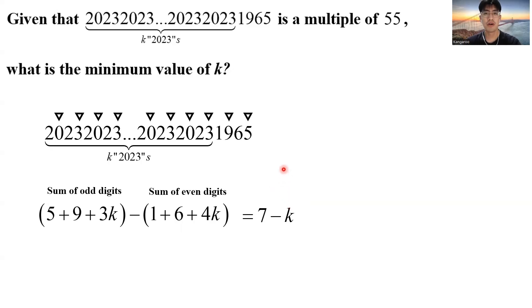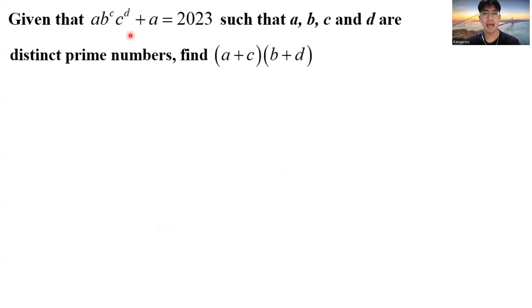Now let us move on to the final question. Given that a times b to the power of c times c to the power of d plus a equals 2,023, such that a, b, c, and d are all distinct prime numbers, they are different, find this value. Well, this problem seems a bit complicated, because I have 4 unknown variables and they are all prime numbers. But at least I can see that this a is a common factor on the left hand side. So let me factorize this a to get a times bracket b to the power of c times c to the power of d plus 1.